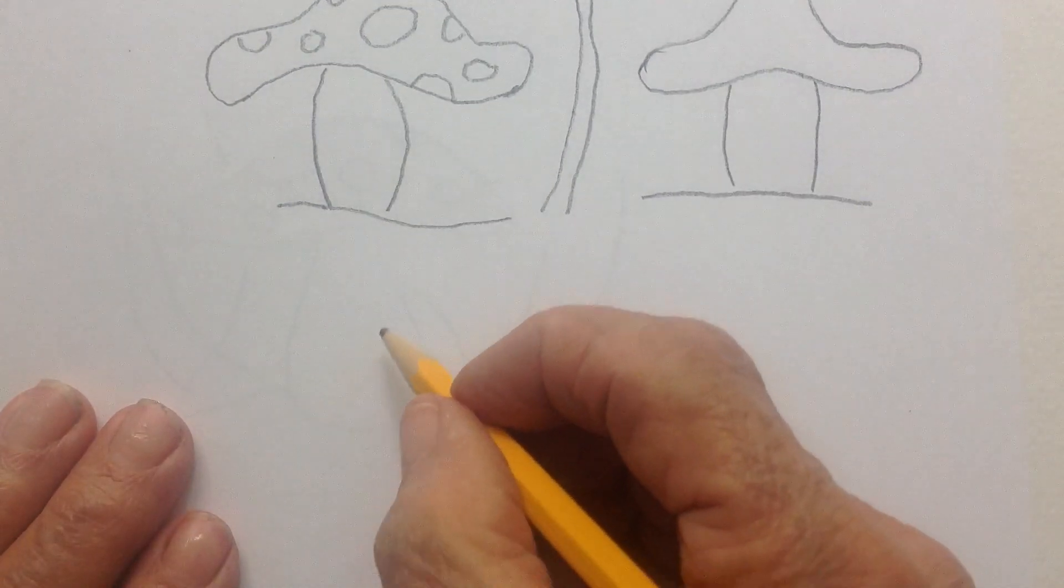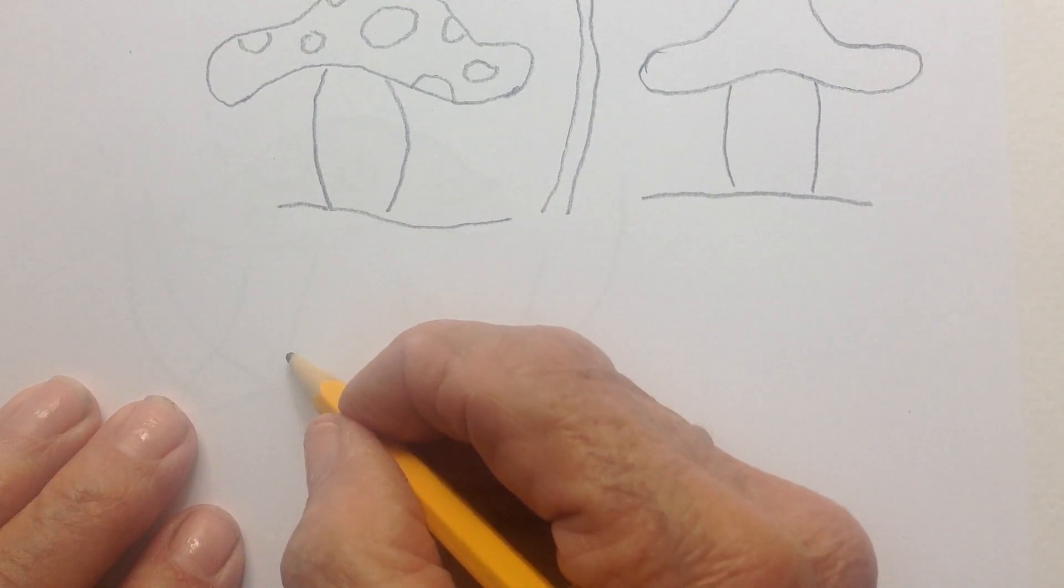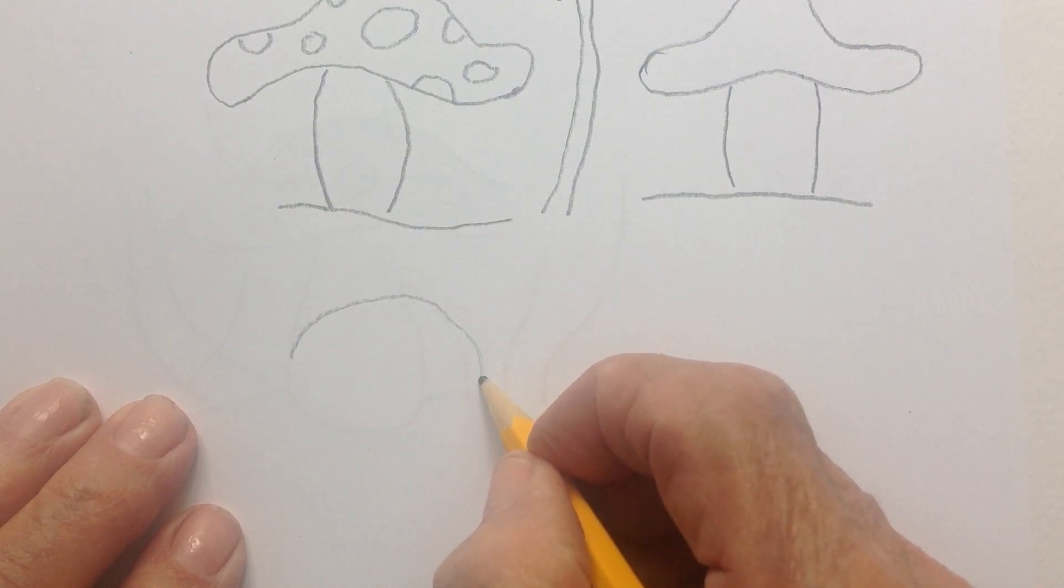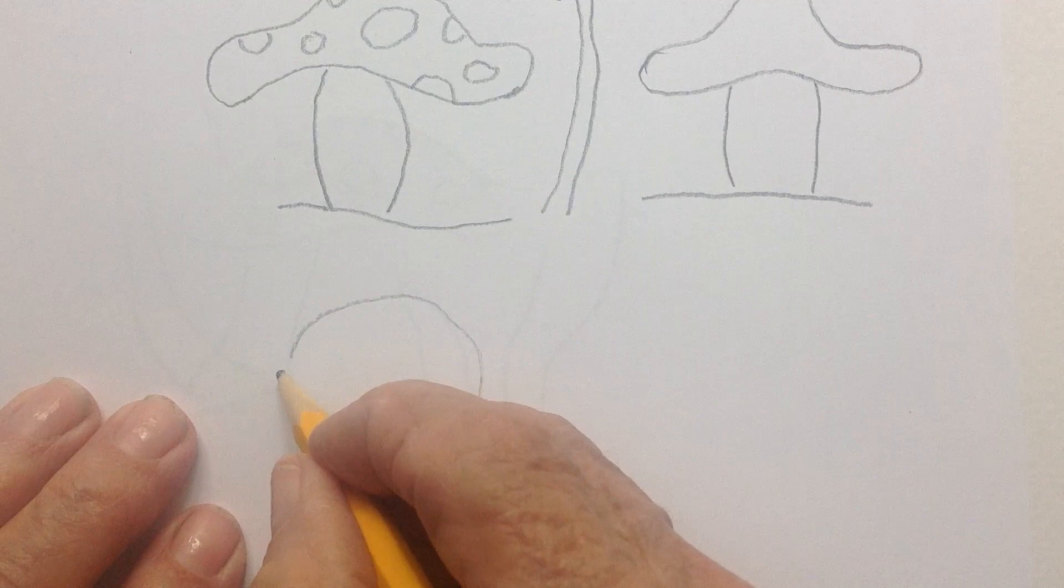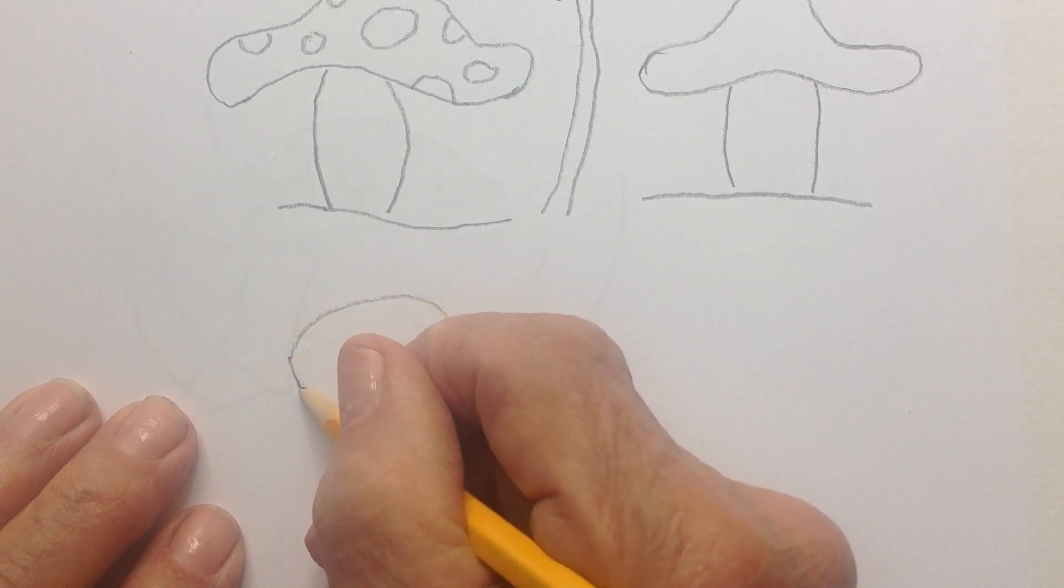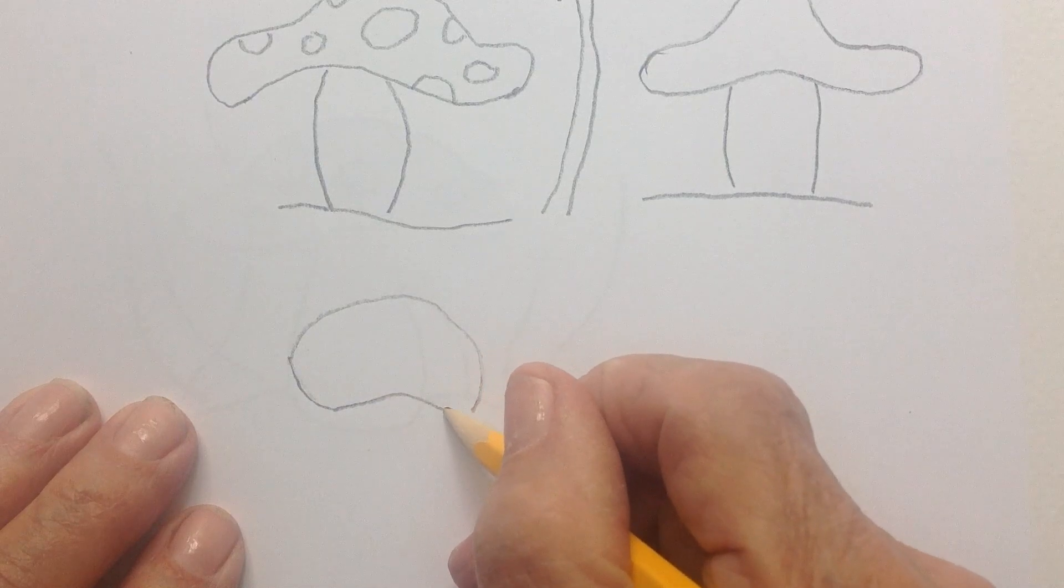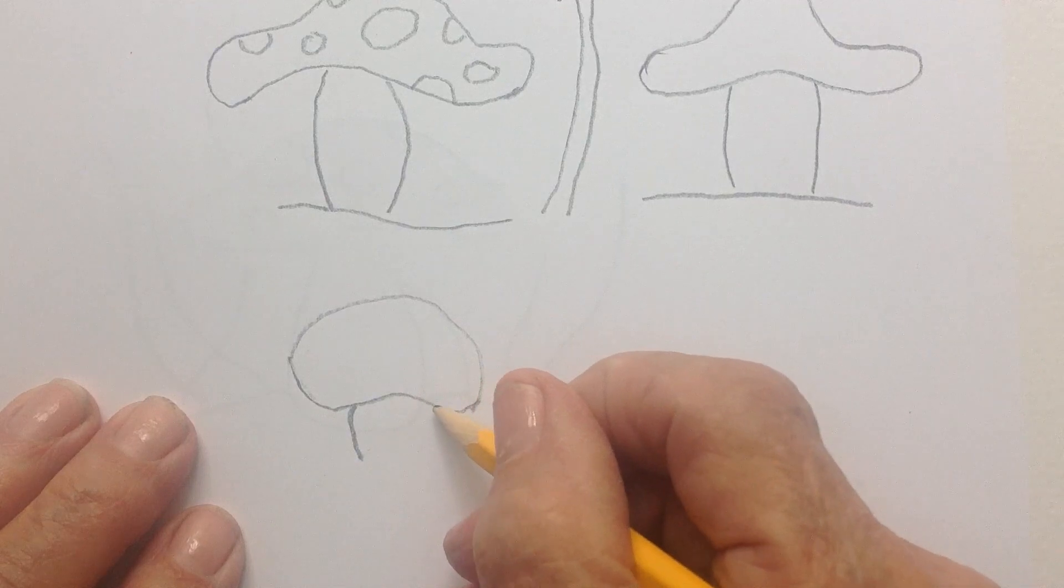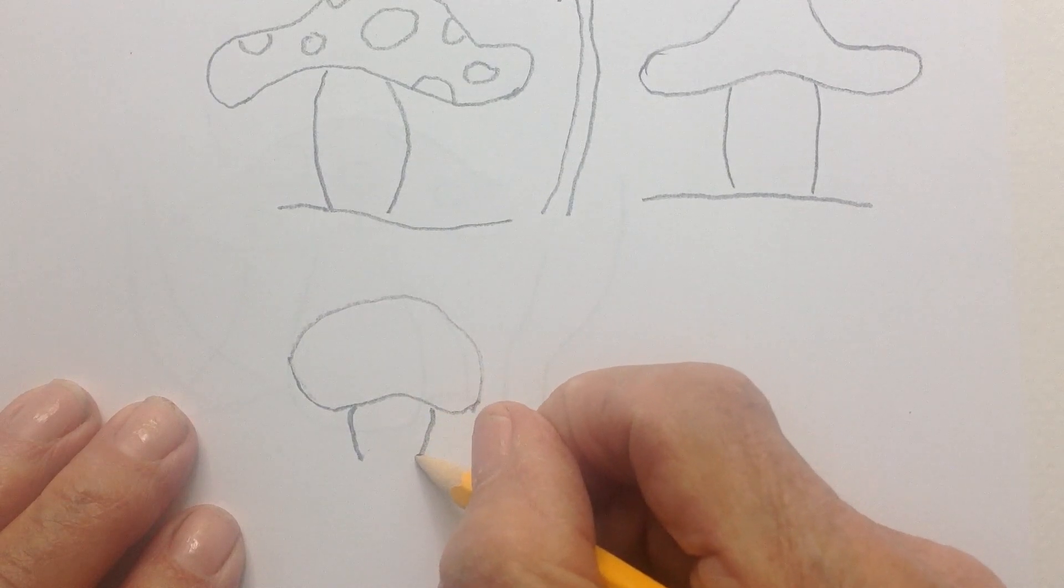Another kind of mushroom would be to show more of the top of it. More of the top. Less of the bottom. And this is called foreshortening.